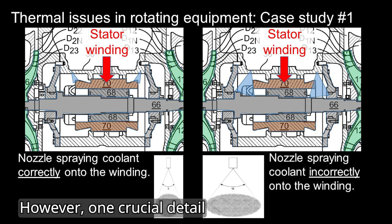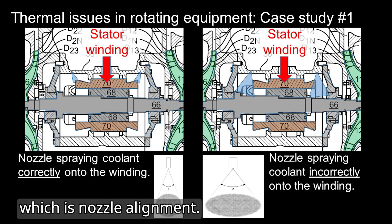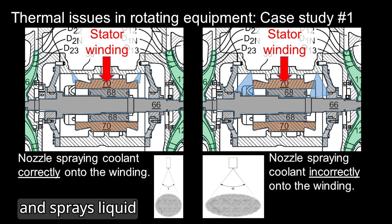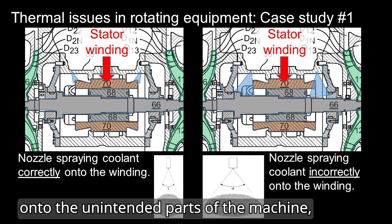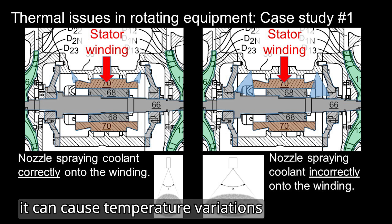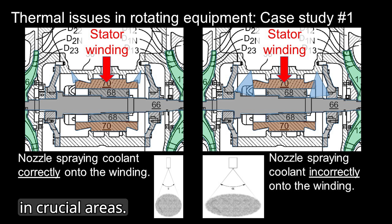However, one crucial detail must not be overlooked, which is nozzle alignment. If the nozzle is misaligned and sprays liquid onto unintended parts of the machine, it can cause temperature variations in crucial areas.